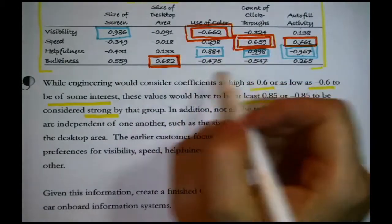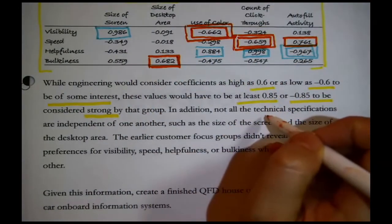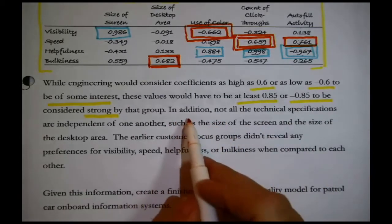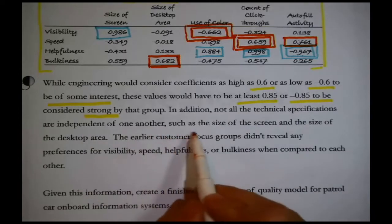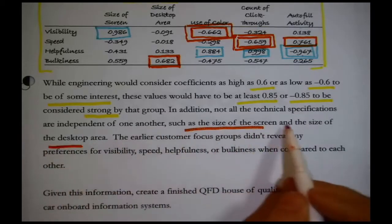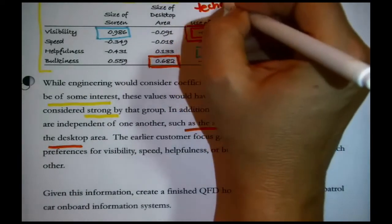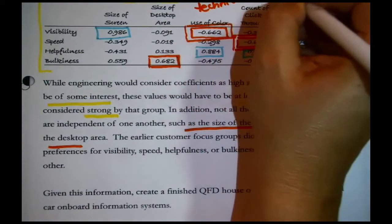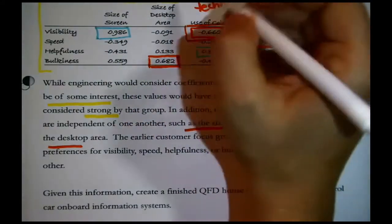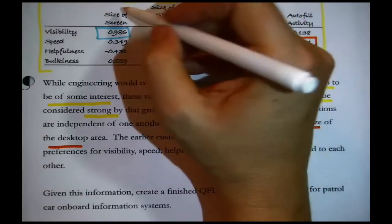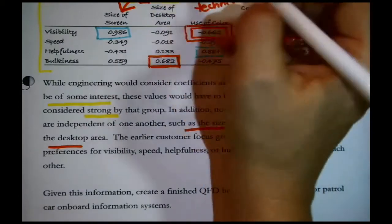Now, we were just highlighting what they said of all of this detail was probably of some interest. They're also telling us something interesting. In addition, not all technical specifications are independent of one another, such as the size of the screen and the size of the desktop area. Now, these are the technical specifications across the top. These are how the engineers talk about the system.